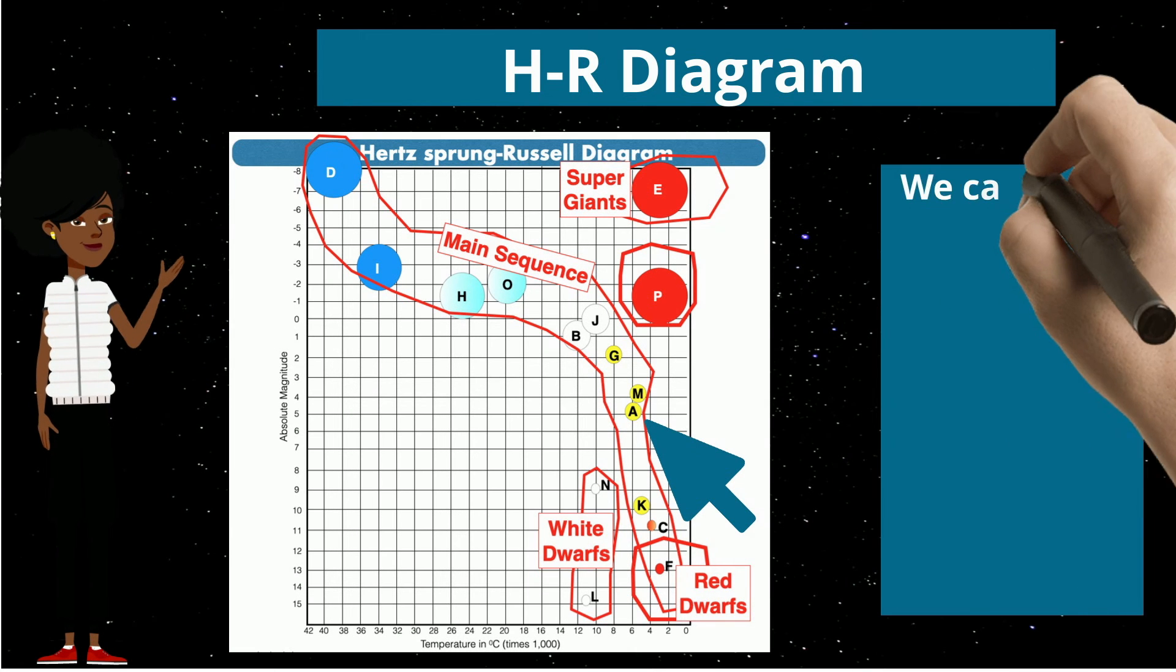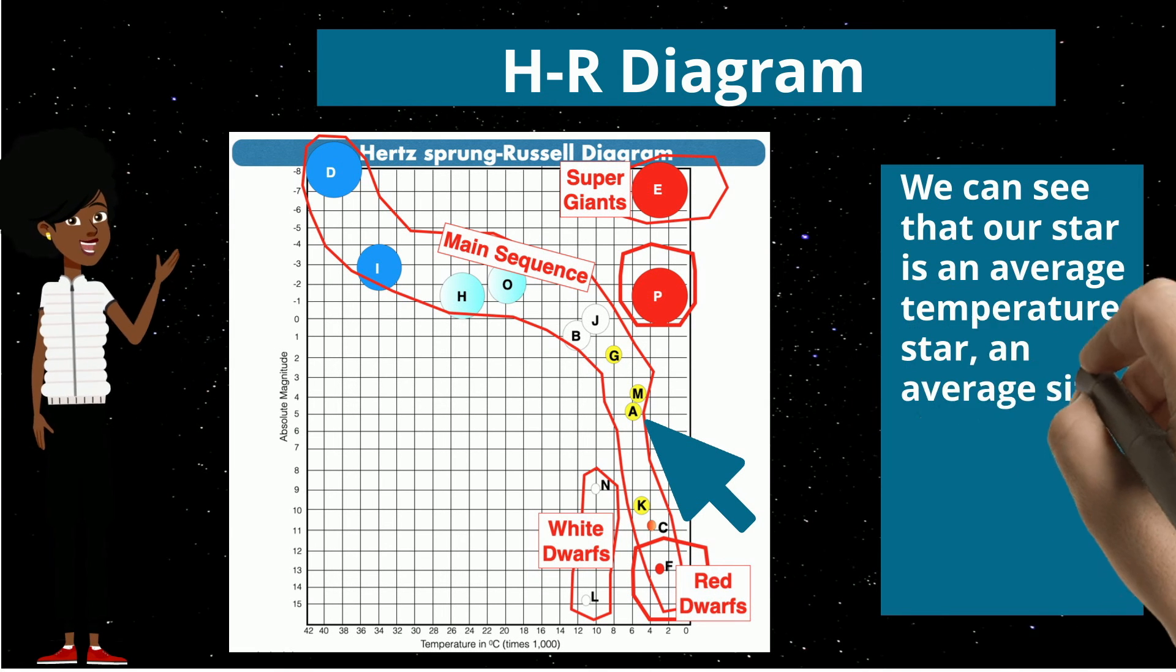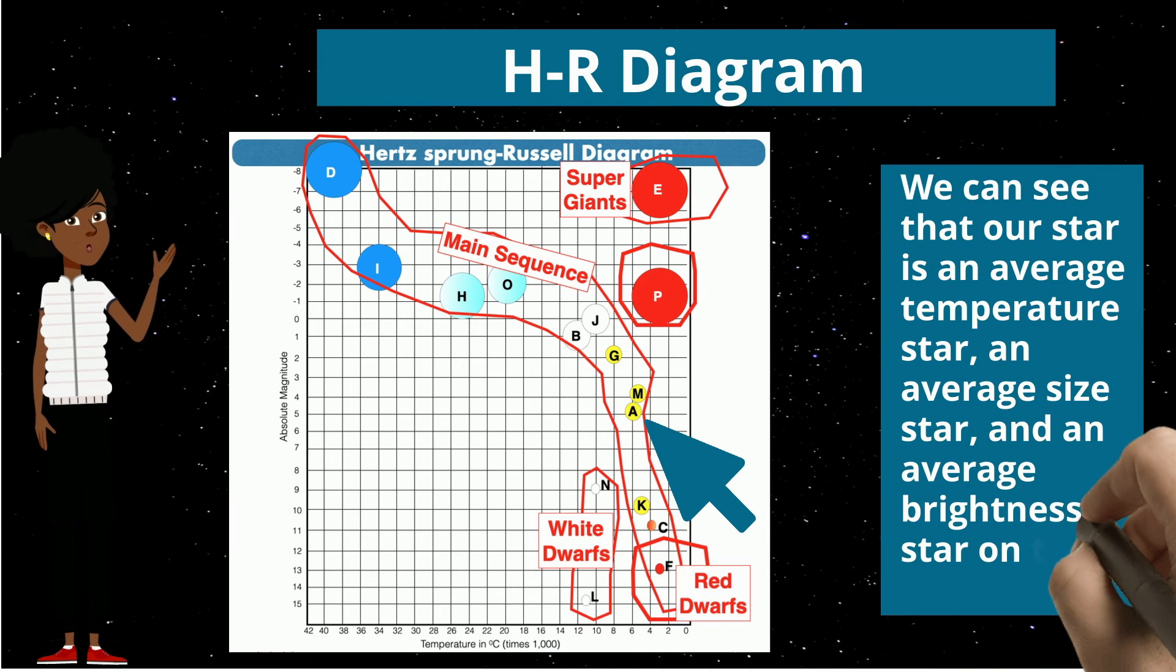We can see that our star is an average temperature star, an average size star, and an average brightness star on that HR diagram.